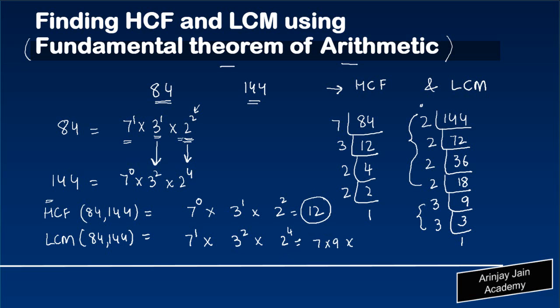So this gives me 7 times 9 times 2 to the power 4 will give you 16, and the answer to this is 1008. So 1008 is the least common multiple of 84 and 144.